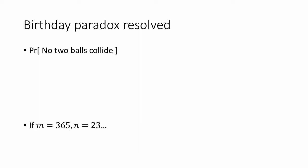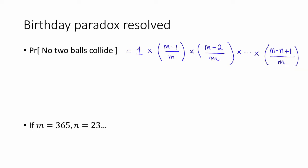Let's imagine dropping balls in one at a time. The probability that the first ball doesn't collide with anything is one, since there's nothing to collide with. The probability that the second ball doesn't collide with the first is (m − 1) / m, since there are m − 1 open bins out of m possible total. Assuming the first two balls don't collide, the probability that a third doesn't collide with either is (m − 2) / m. Note that we're assuming n ≤ m, since if n > m, two balls are guaranteed to collide by the pigeonhole principle. Altogether, the probability that no two balls collide equals (m−1)(m−2)···(m−n+1) / m^(n−1).